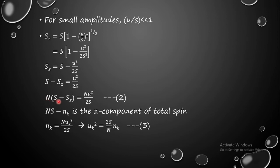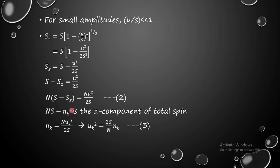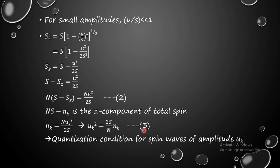Simplifying: Ns − NSz = Nuk²/2s, giving NSz = Ns − Nuk²/2s. Rearranging, uk² = (2s/N) × Nk, which we call equation 3. This equation represents the quantization condition for spin waves of amplitude uk.